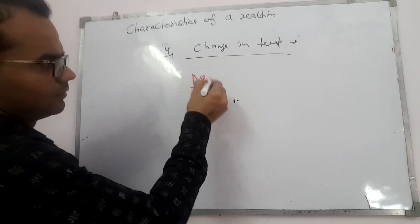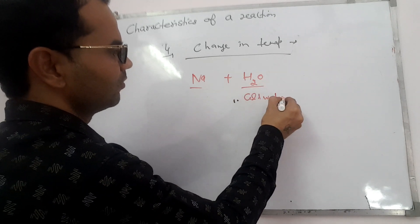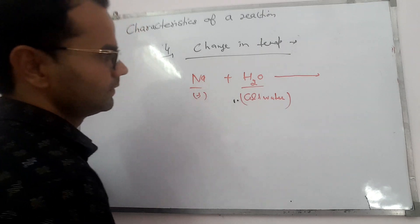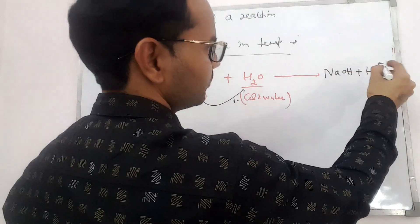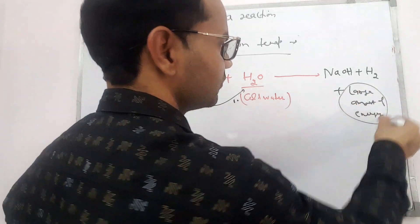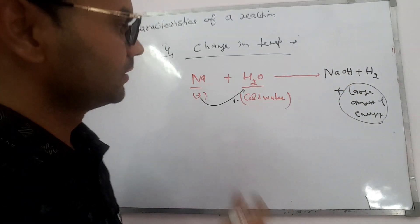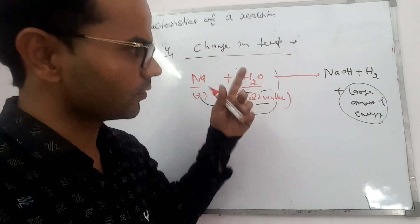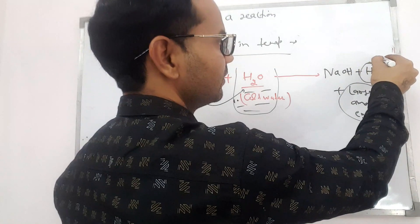For example, a piece of sodium is dropped into a container of cold water. Sodium reacts with water to form sodium hydroxide plus hydrogen gas, releasing a large amount of energy. So during the reaction, energy is released and there will be a rise in temperature. If you touch the beaker containing water, it will be slightly warm. The energy released is quite high, so the hydrogen gas catches fire and burns.